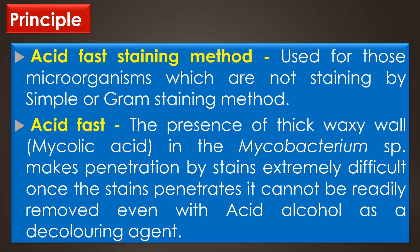Principle. The acid-fast staining method is used for those microorganisms which are not stained by the simple or Gram staining method, particularly the members of the genus Mycobacterium, Nocardia, and Cryptosporidium. The presence of a thick waxy cell wall — that is, the mycolic acid in Mycobacterium species — makes penetration by stains extremely difficult.